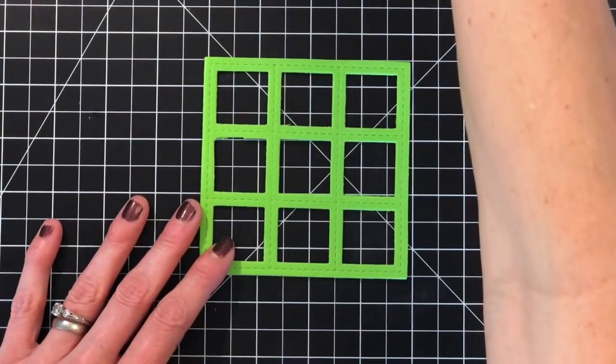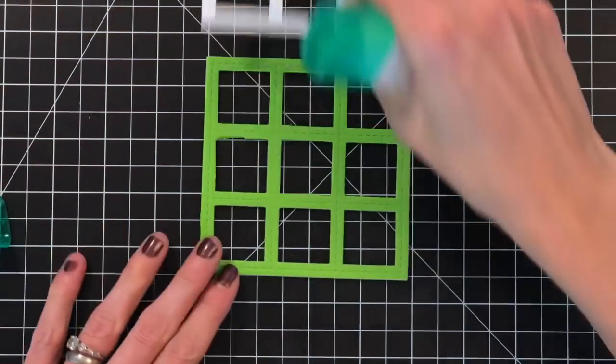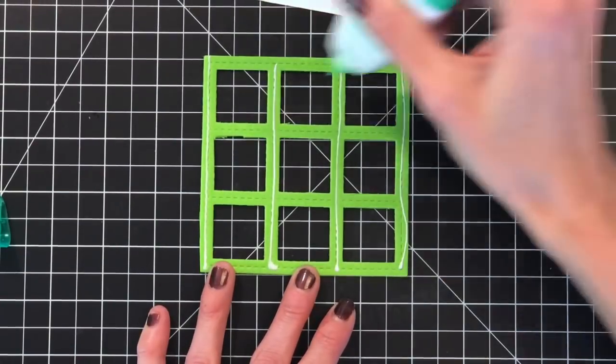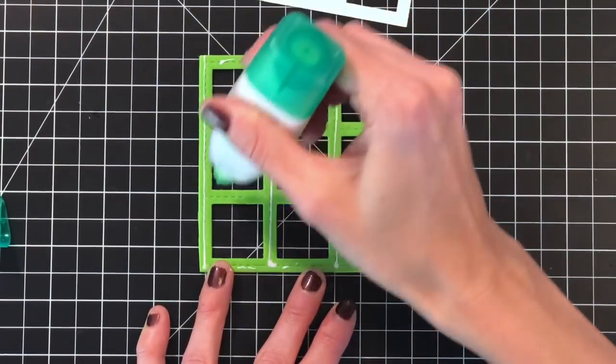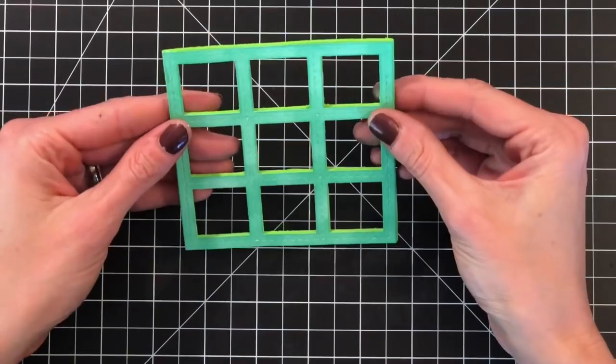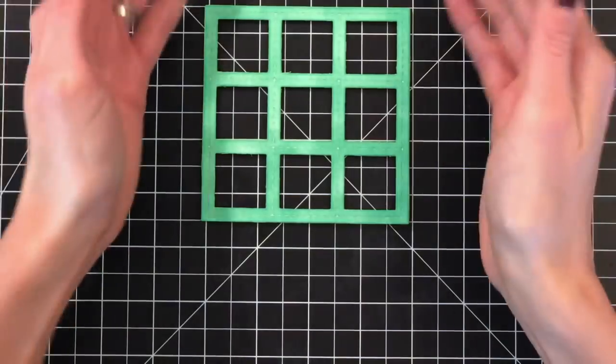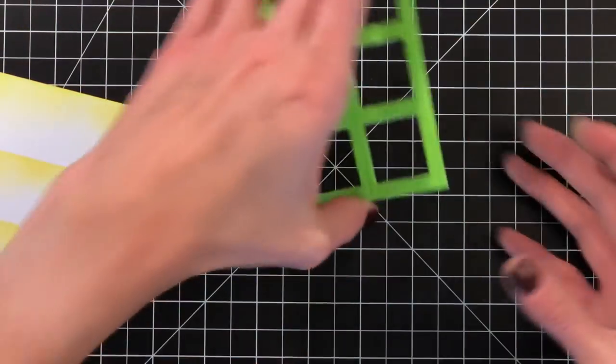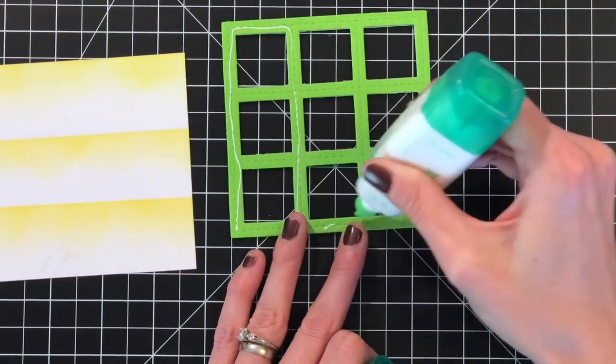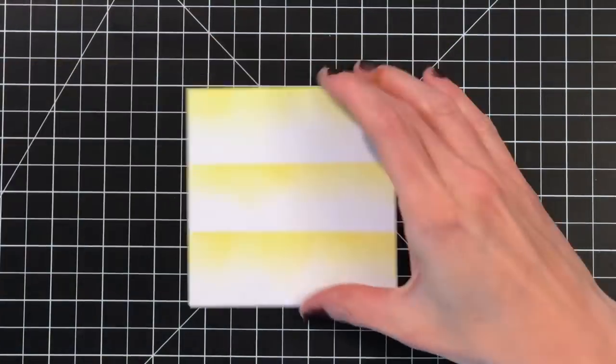I'm going to use some Tombow Mono Multi Liquid Adhesive here and just put it all over the foam grid. I really like this adhesive for anytime I'm using craft foam. And I'm going to stick with this adhesive for the rest of this card just because I have it out and it's handy. But it's a wonderful adhesive, especially for multiple surfaces like other than paper. You know like sequins and craft foam. This glue is really great for lots of different surfaces. So it's a wonderful glue to have.